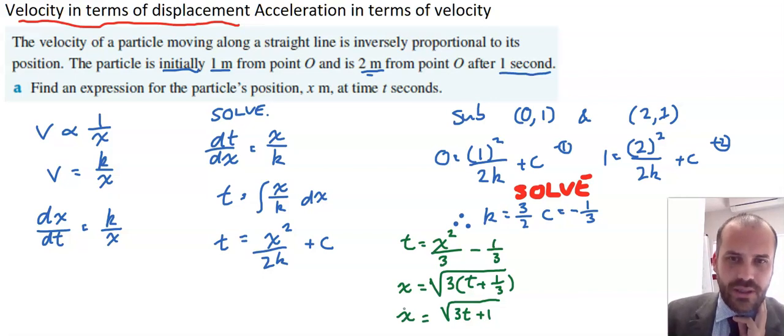Now, you might be thinking that we need a plus or minus there. And technically, we should have a plus or minus in the beginning. But we can get rid of the negative sign, because we know that when t is equal to 0, initially, x is equal to 1.